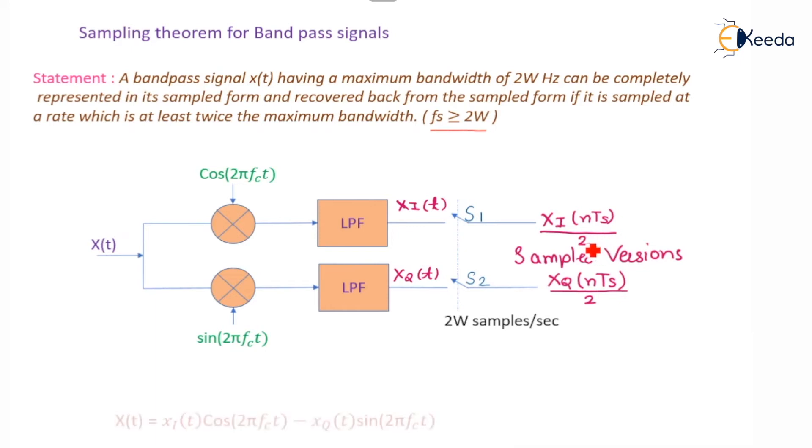The output signal we will get is X(t) equal to Xi(t)cos(2πfct) minus Xq(t)sin(2πfct). So this is the sampled one.